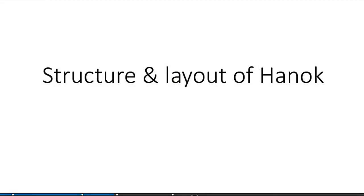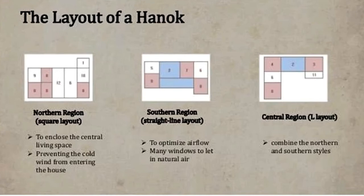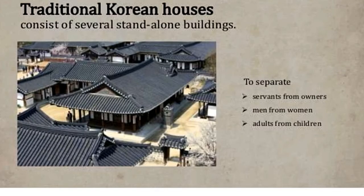The layout of hanok in the northern region is a square layout to enclose the central living space, preventing cold wind from entering. In the southern region, a straight-line layout optimizes airflow with mini windows to let in natural air. In the central region, an L-shaped layout combines northern and southern styles. Traditional Korean houses consist of several stand-alone buildings to separate servants from owners, men from women, and adults from children.